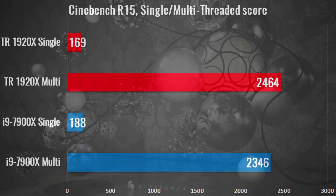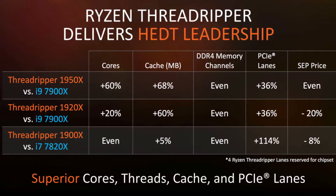Intel performs better in single-core tasks. But in multi-core 3D rendering, AMD Threadripper has a speed advantage. The video is also about gaming — with the AMD Threadripper, you can use it for gaming as well.